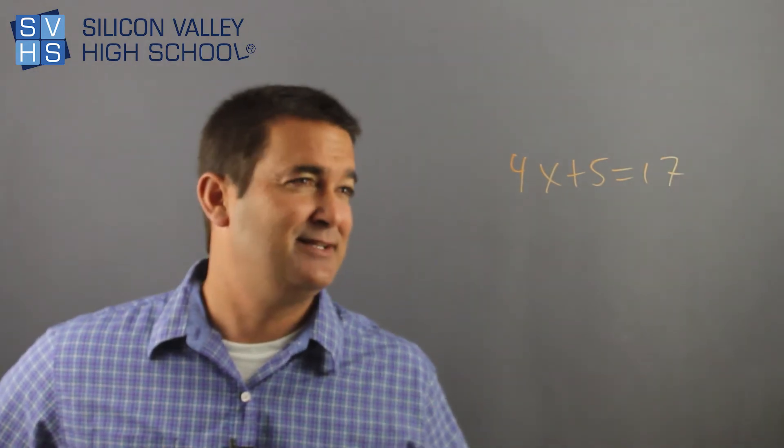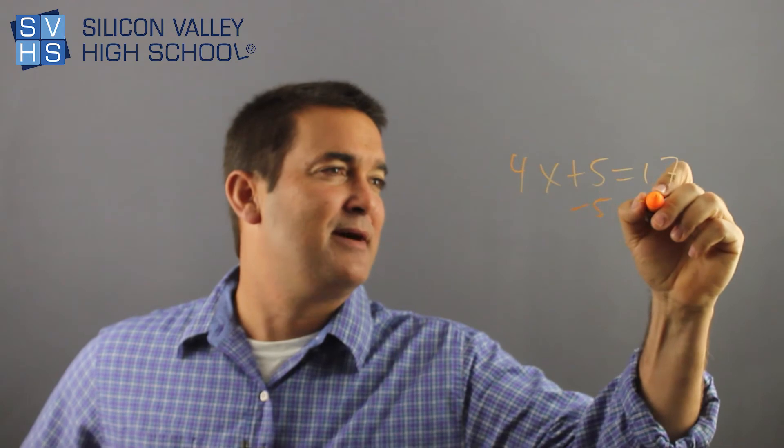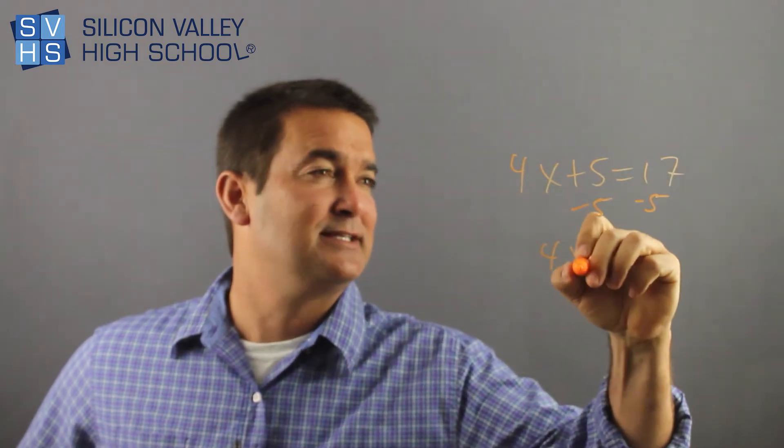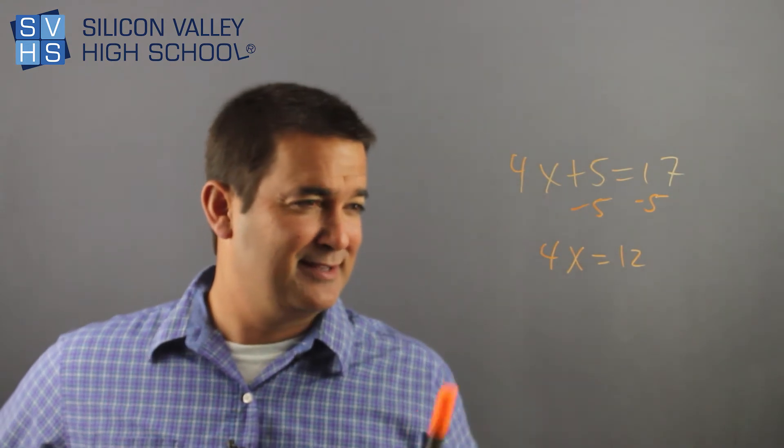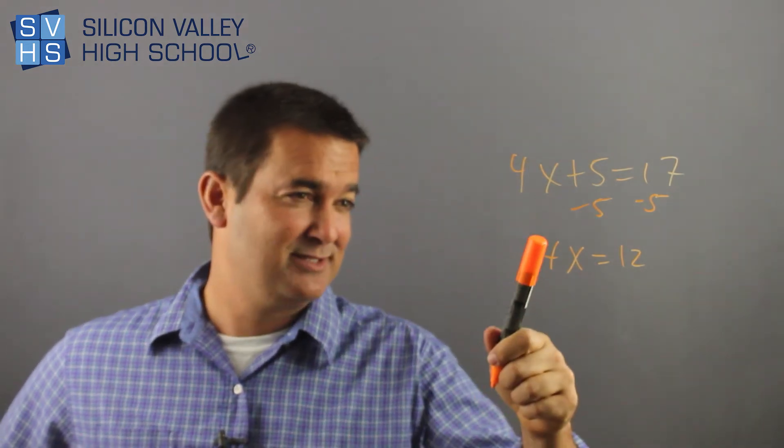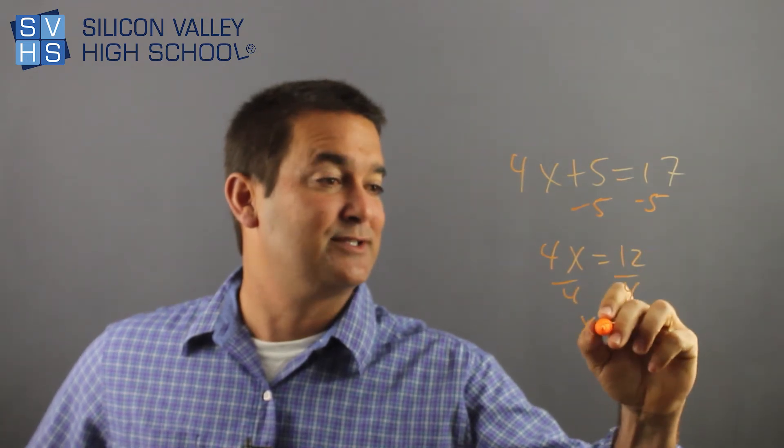Again, do the 4x last. Do that last. Let's get this 5 out of here first. Minus 5, minus 5 to both sides. 4x equals 12. And now, again, I'm kind of like close to getting x alone. Opposite of 4 times x is divide. Oh, okay. x equals 3.